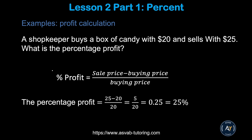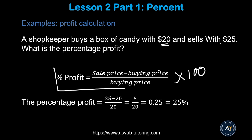Next, we'll learn how to calculate profit. The formula is: Percent of Profit = (Selling Price − Buying Price) / Buying Price × 100. Remember, percent is converted over 100. For example: buying price is $20 and selling price is $25.